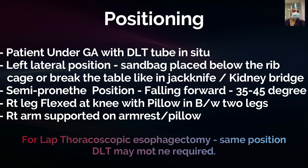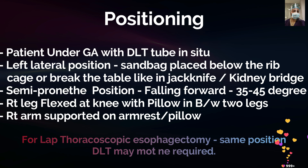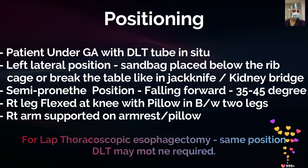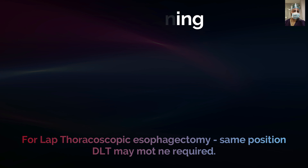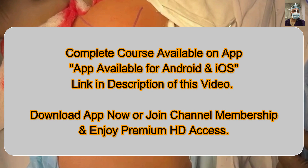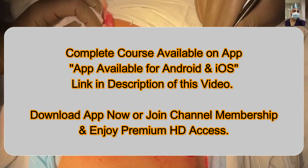The patient is tilted toward a semi-prone position — the sky-fall or falling-forward position — at an angle of 35 to 45 degrees depending on surgeon convenience. The right leg is flexed at the knee with a pillow between the two legs, and the right arm is supported on an arm rest or over a pillow. For thoracoscopic or laparoscopic-assisted esophagectomy, the same position is used, so if conversion is required, thoracotomy can be performed without repositioning.